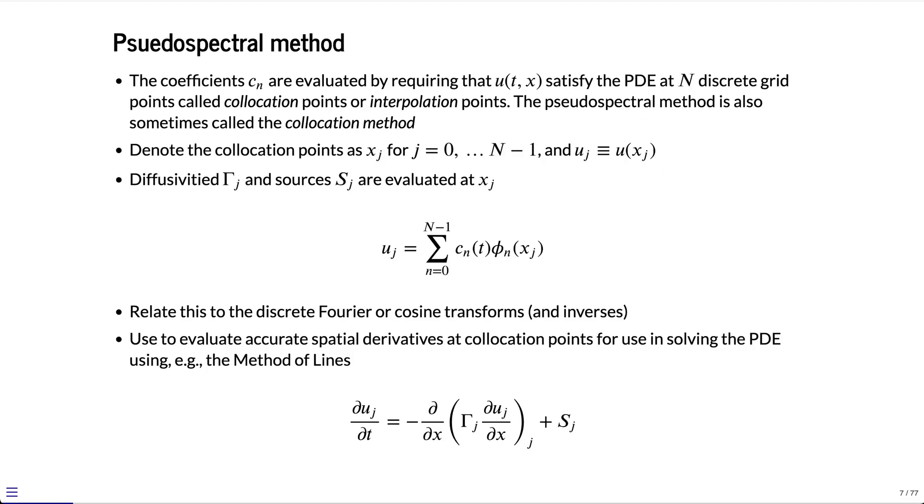In the pseudospectral method, to summarize how the method works, the coefficients cn are evaluated by requiring that the scalar function u of t and x satisfy the partial differential equation at N discrete grid points called collocation points or interpolation points. Sometimes the method is also called the collocation method. This is in contrast to spectral methods that have a little bit different representation for how the coefficient cn are evaluated.